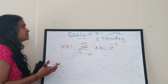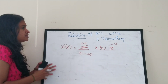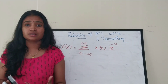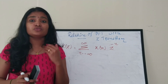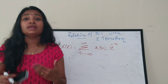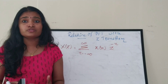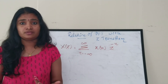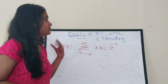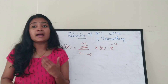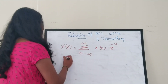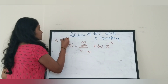Now what we are going to do is relate the Z-transform with the DFT. So we have to bring the DFT terms in here. For that, we are going to substitute the value of x(n) in terms of the IDFT, since we know x(n) can be represented in IDFT terms.